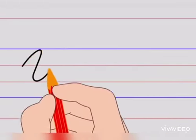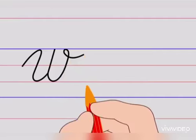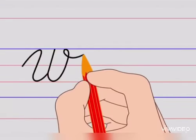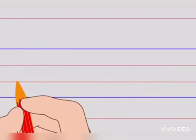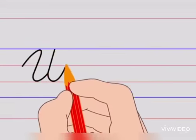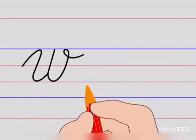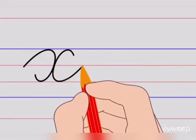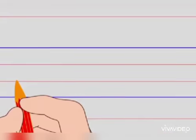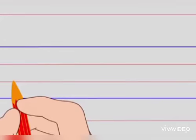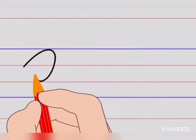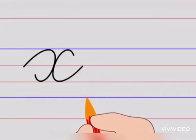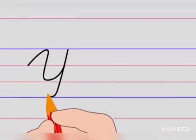The next alphabet is W. Cursive Capital W. Let's do it again — Cursive Capital W. The next alphabet is X. Cursive Capital X. Let's try it again — Cursive Capital X.